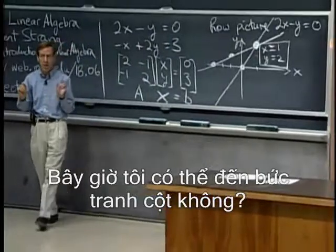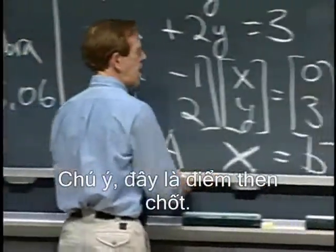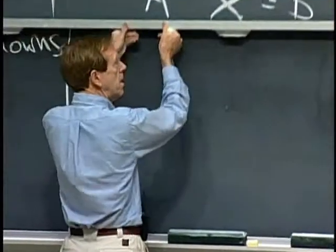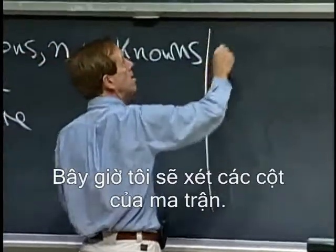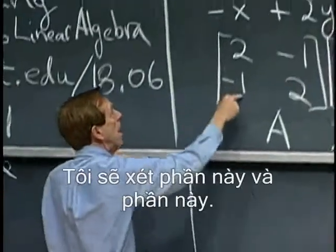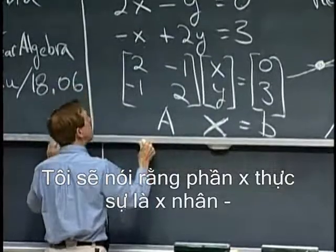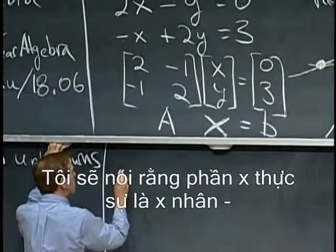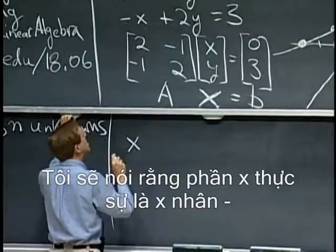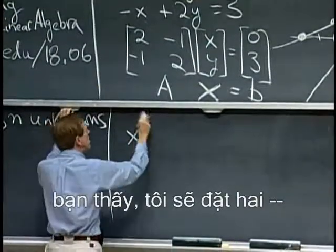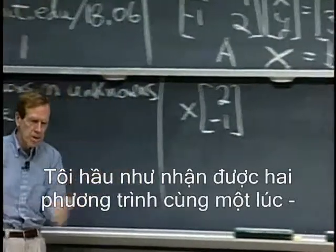Now can I come to the column picture? Pay attention, this is the key point. So the column picture — I'm now going to look at the columns of the matrix, this part and this part. I'm going to say that the x part is really x times... I'm kind of getting the two equations at once.